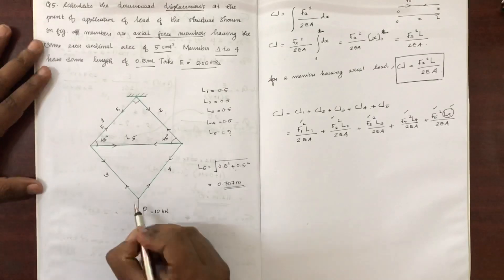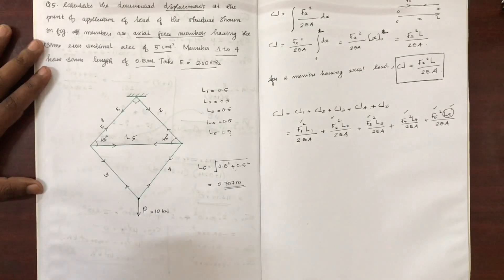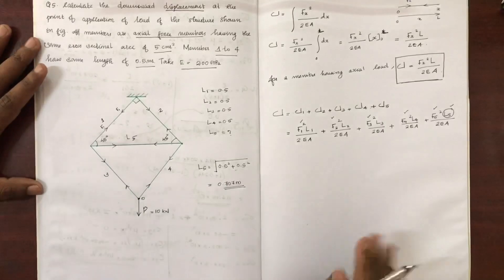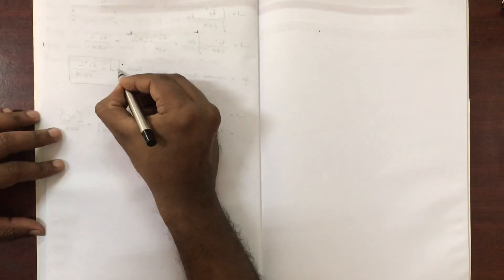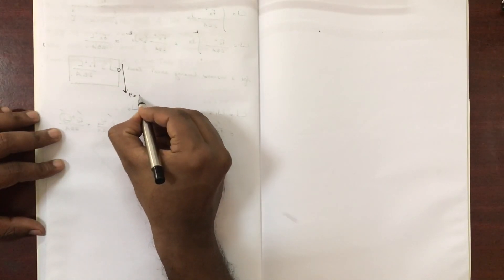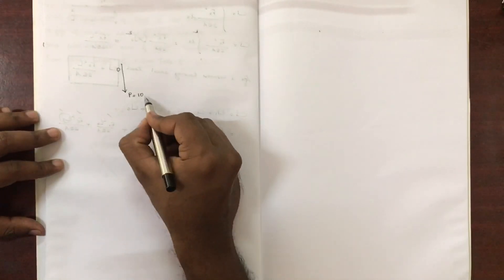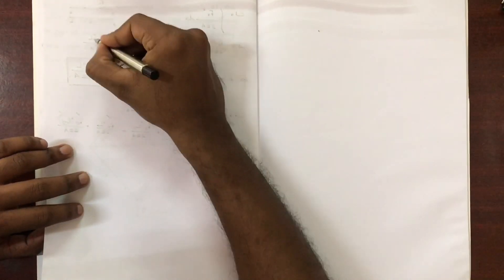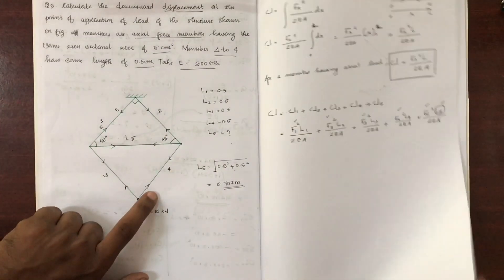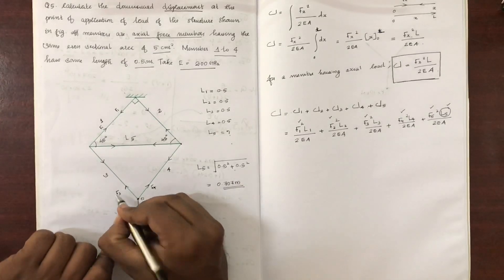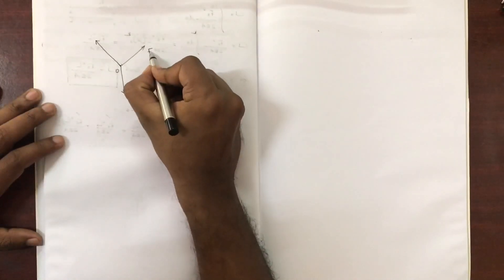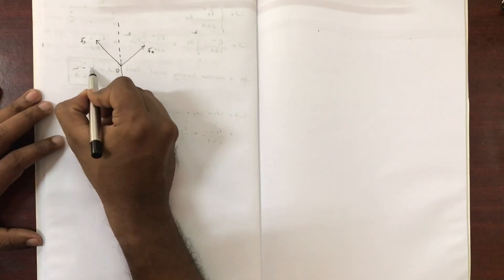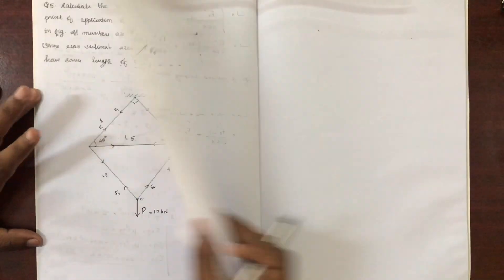We look at F1, F3, F4, and F5. We need to look at the joint. This is the joint. P is equal to 10 kN. You can see the pin and its directions. Now you have to figure out the force. This is F4 and F3. The method of joints gives us F4 and F3.